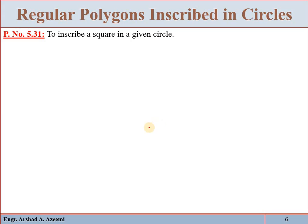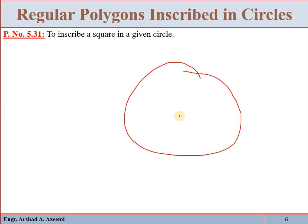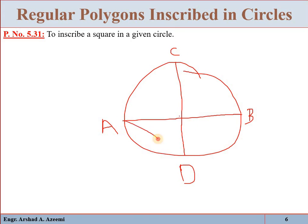To inscribe a square in a given circle: suppose the circle is given and we have to inscribe a square. Draw the horizontal diameter AB and draw a perpendicular diameter CD. Now join A with D, D with B, B with C, and C with A. That will be the required inscribed square.